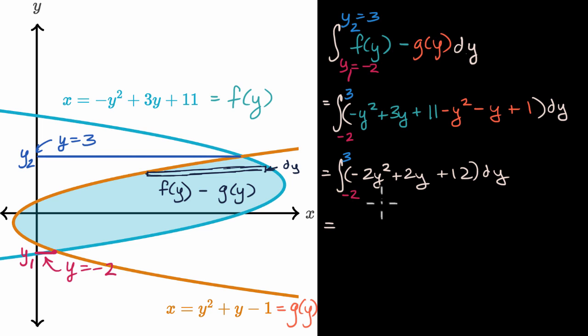What is that going to be equal to? We just take the antiderivative here. This is going to be -2y³/3 + y² + 12y, and we're going to evaluate that at 3 and at -2.